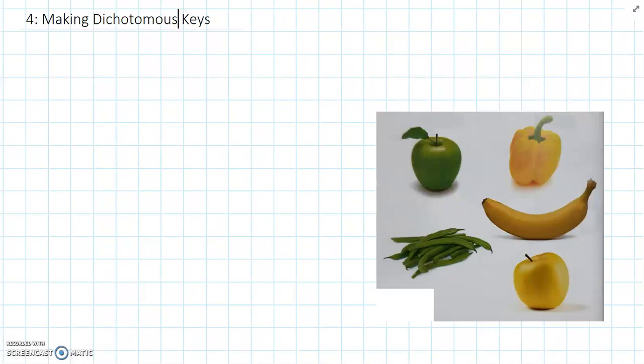Now that we've seen how dichotomous keys work, we're going to practice making a dichotomous key. And we're going to use these fruit here as the objects that we're going to classify.